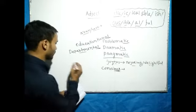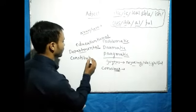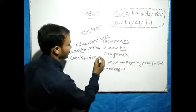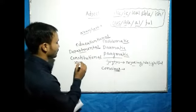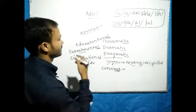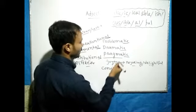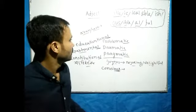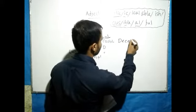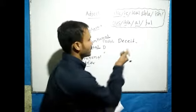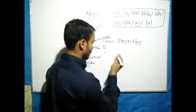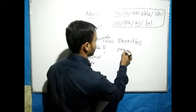Similarly, 'constitution' — we all know that 'constitution' means 'samvidhan' (the constitution). Now let us see how '-al' is added: 'constitutional.' When '-ful' is added to words like 'peace,' we get 'peaceful.' We all know that 'peace' means 'shanti' (peace), and 'peaceful' means full of peace.